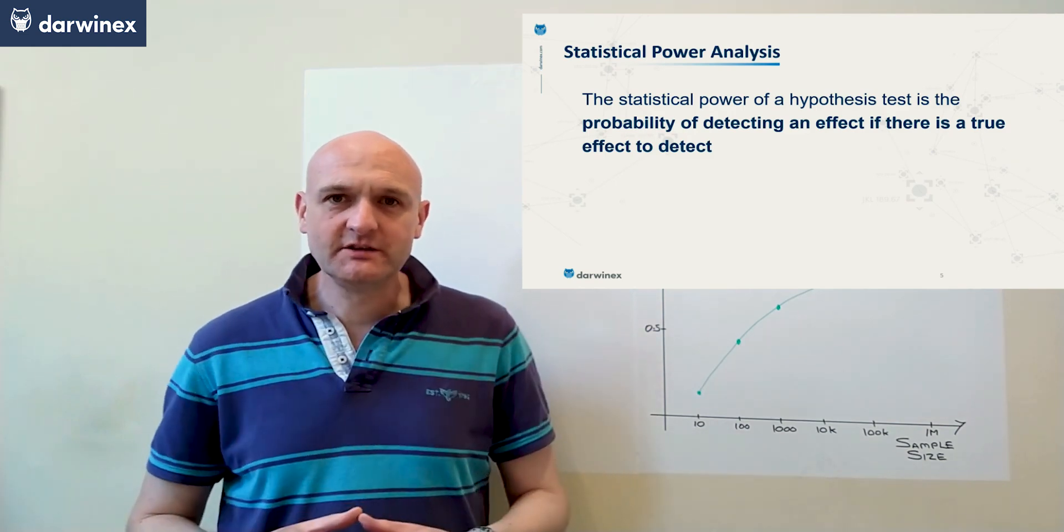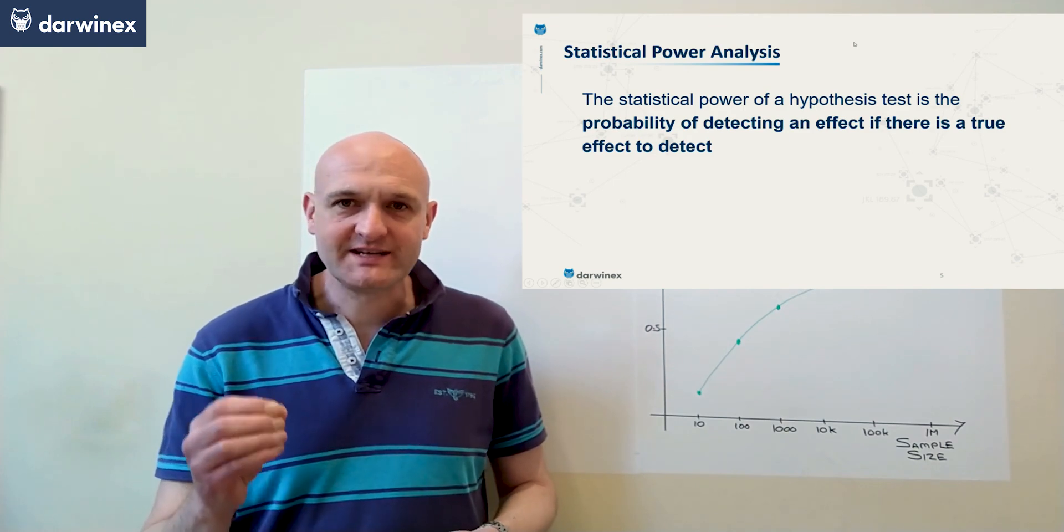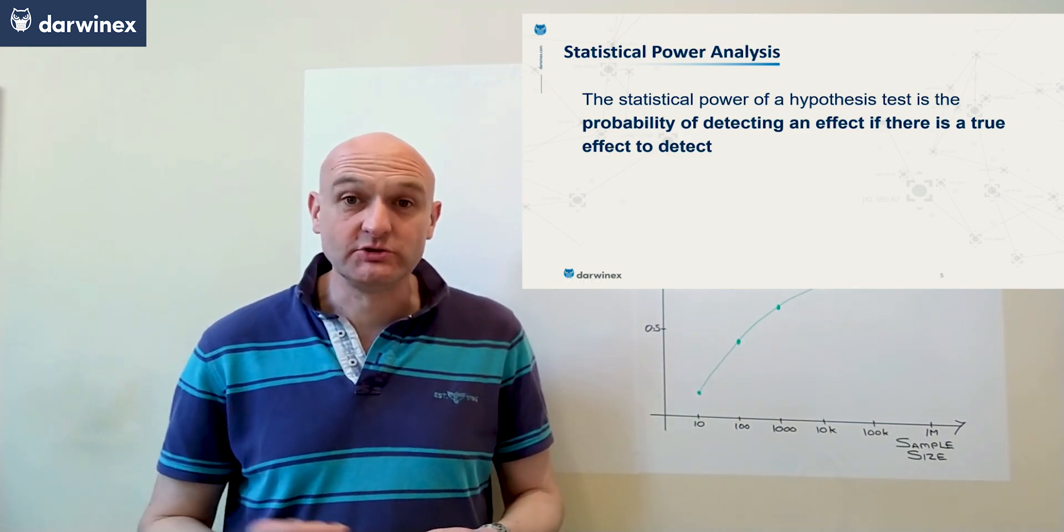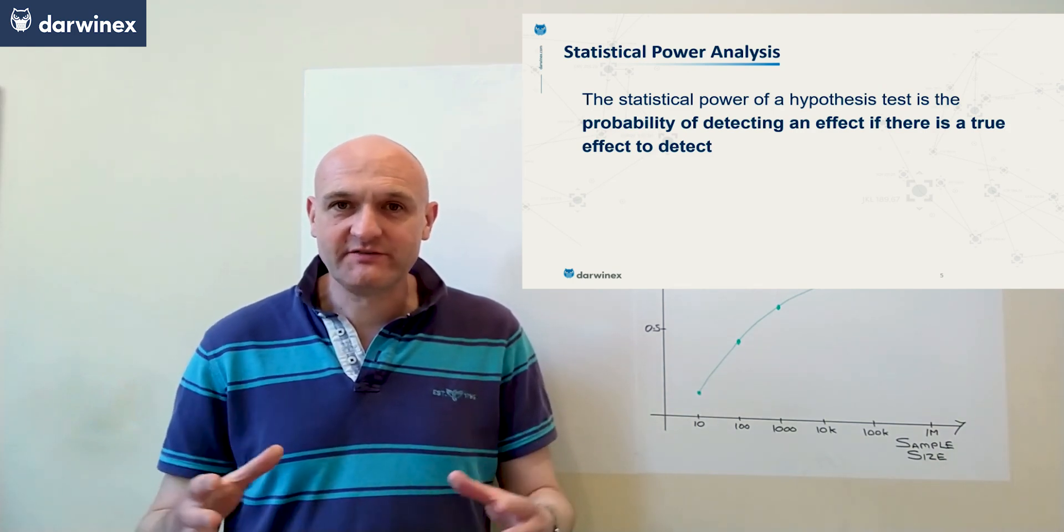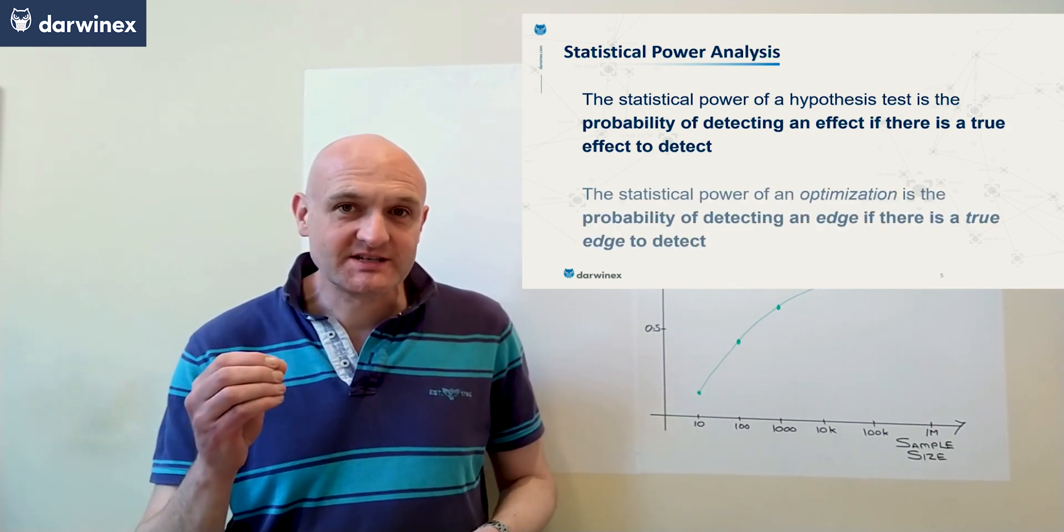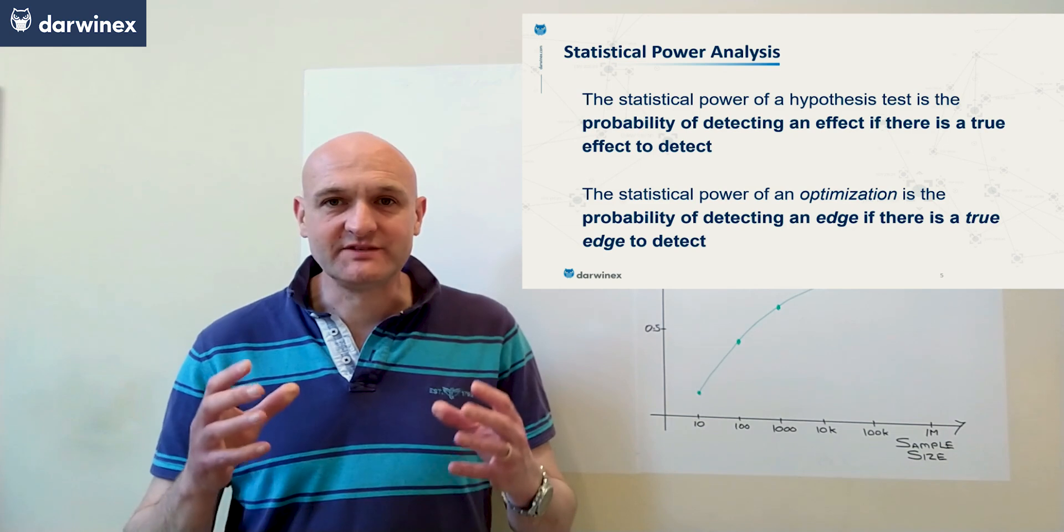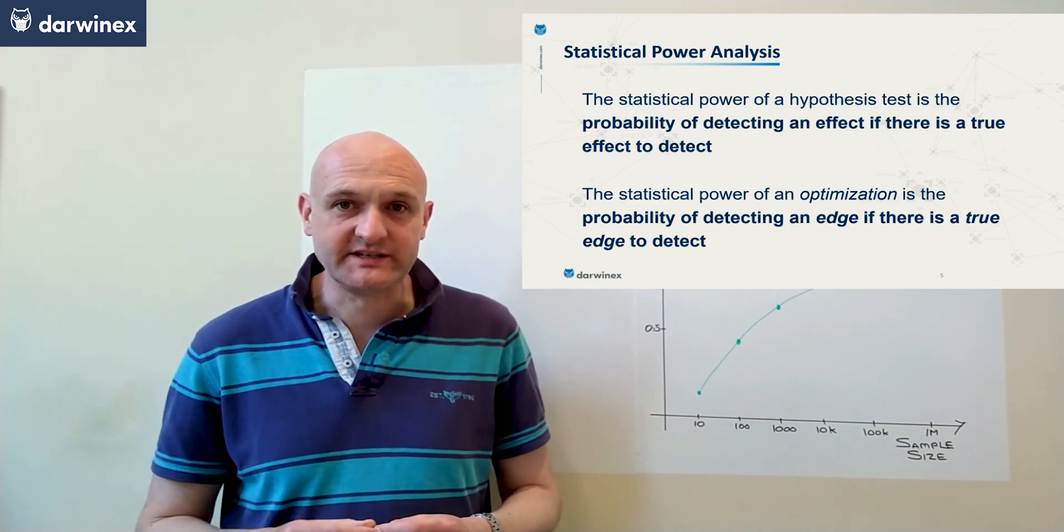The formal definition is this: The statistical power of a hypothesis test is the probability of detecting an effect if there is a true effect present to detect. And translating this into our context, we could be more specific and say that the statistical power of an optimization is the probability of detecting the best edge if there is a true edge present to detect.